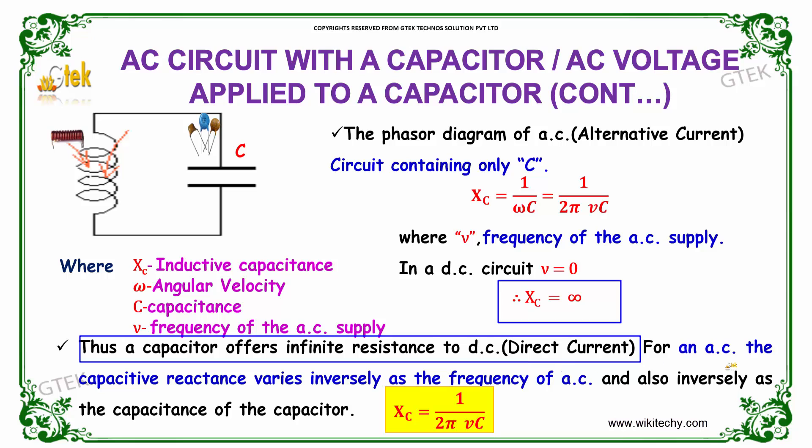Thus, for alternating current, the capacitor reactance varies inversely as the frequency of AC and also inversely as the capacitance of the capacitor.